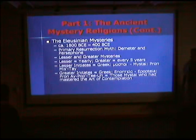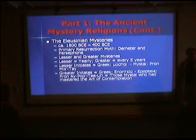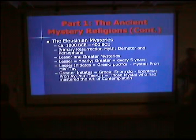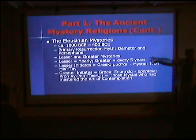Next come the Eleusinian Mysteries, from about 1800 BCE to 400 BCE. Their primary resurrection myth was the myth of Demeter and Persephone. Demeter was the goddess of the harvest; her daughter Persephone went down to Hades out of curiosity. Hades wanted to keep her. Demeter went to Zeus, who said she'd chosen of her own free will. Demeter threatened to stop all the seasons and harvests. For four months there was no harvest, and finally Zeus relented. Hades agreed to release Persephone for eight months. That was how we got the seasons, according to this particular myth.